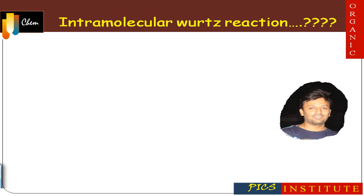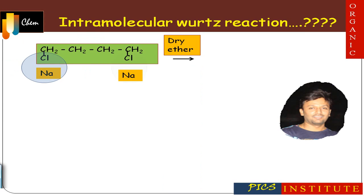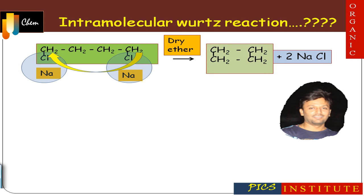Intramolecular Wurtz reaction involves use of an alkyl dihalide. One molecule of alkyl dihalide reacts with sodium, resulting in formation of sodium halide; splitting of bonds occurs and the two carbons combine together to form cycloalkane. So intramolecular Wurtz reaction involves formation of cyclic hydrocarbons.